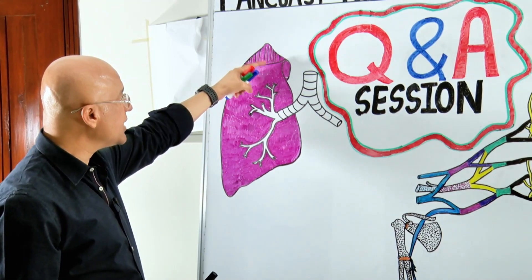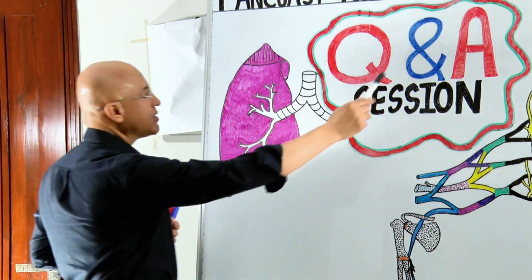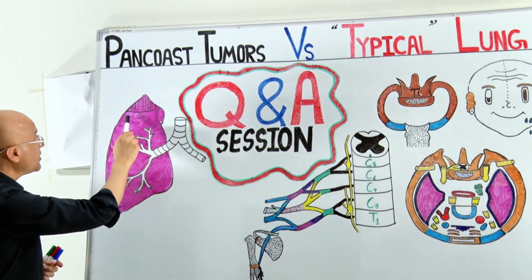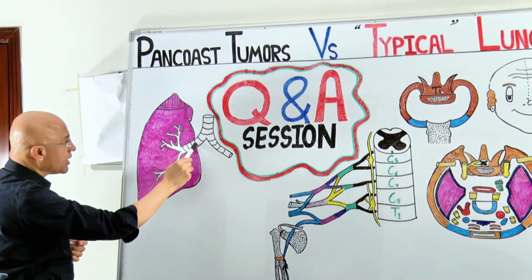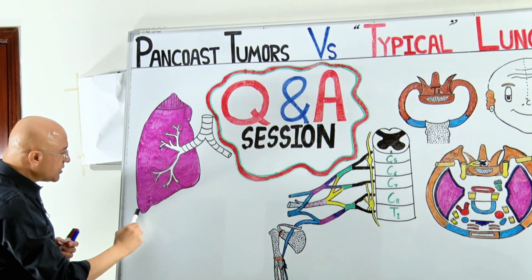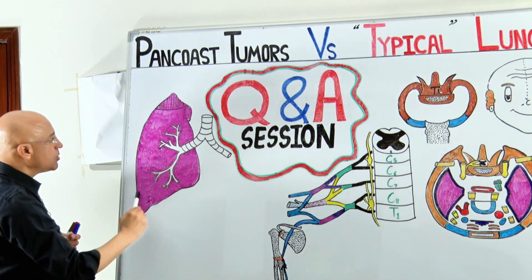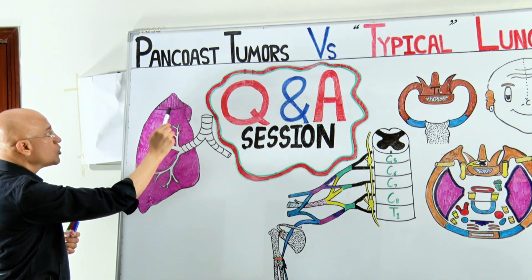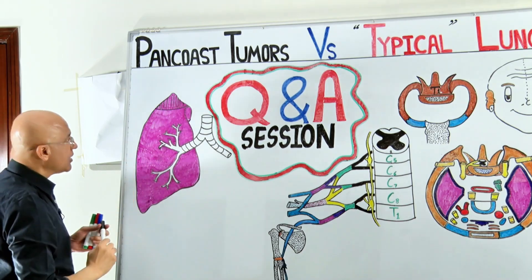Why are they named differently than all other cancers? When we talk about typical lung carcinomas — 'typical' in inverted commas — other lung carcinomas means, in our discussion, all primary cancers in the lung except those originating from the uppermost or apical part of the lung.